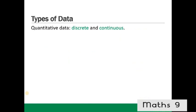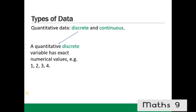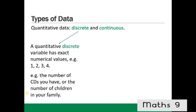Quantitative data can be divided into discrete and continuous. A quantitative discrete variable has exact numerical values, e.g. 1, 2, 3, 4. For example, the number of CDs you have, or the number of children in your family.